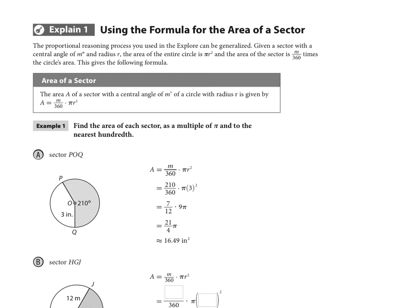Or seven-twelfths of 9π, which is 63 over 12, reduced is 21 over 4 π. So this is our exact answer in terms of π.